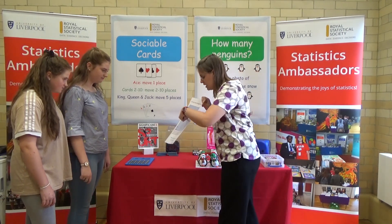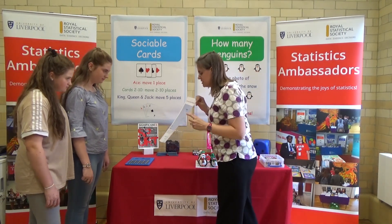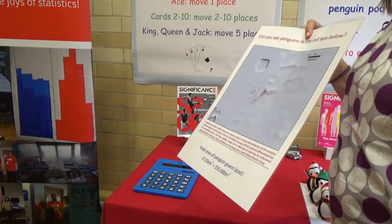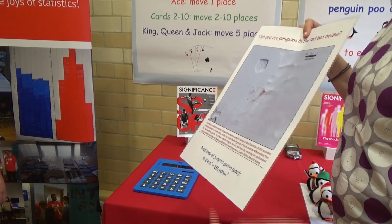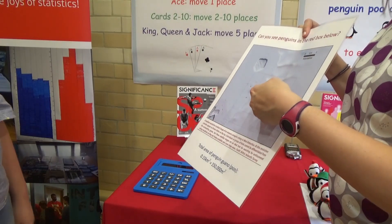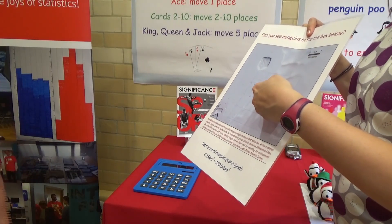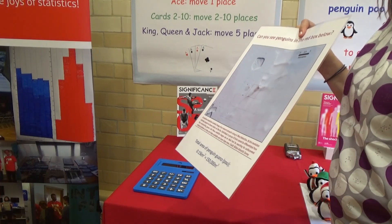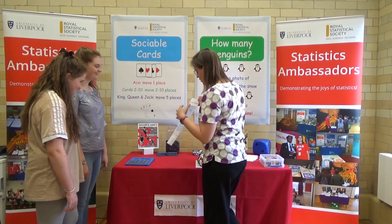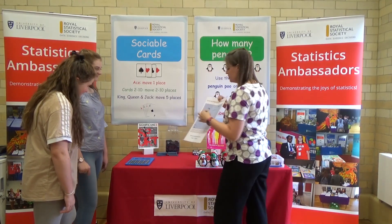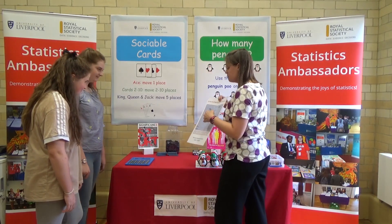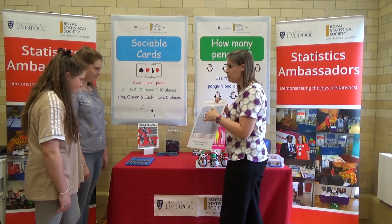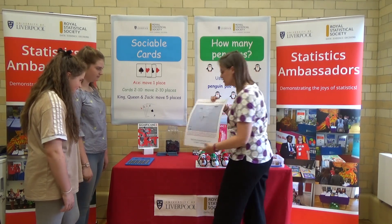Can you see individual penguins in that red square? No. What you can see is brown stuff. What might brown stuff be that penguins produce? Poo. Absolutely. So what we're going to do is we're going to use the penguin poo to work out how many penguins are in this red square.